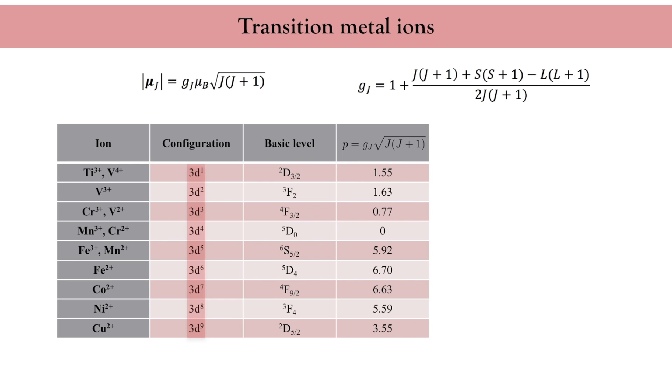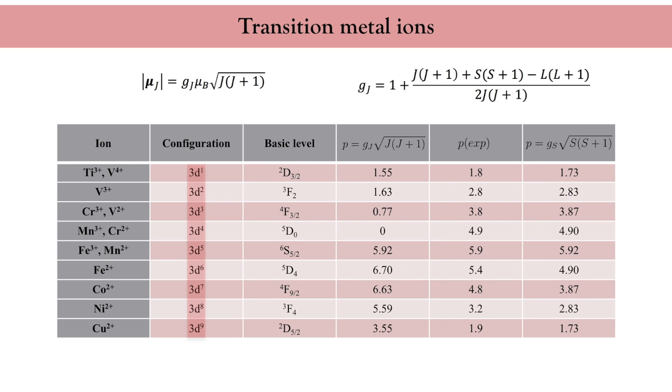Now, remarkably, this does not correspond at all to what is experimentally observed. Actually, the observed magnetic moment corresponds to the spin contribution only. So everything works as if the orbital momentum were quenched. This is really a fascinating situation that we will look into more closely in the next lecture.